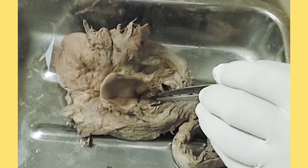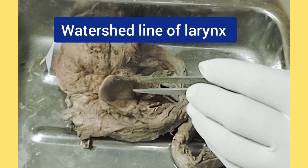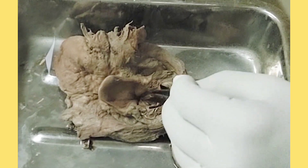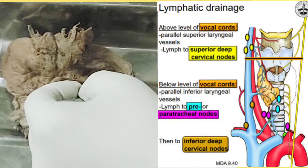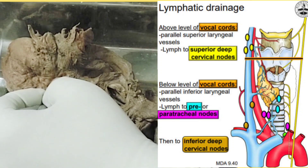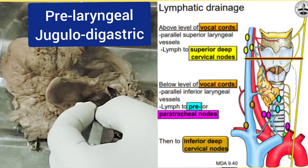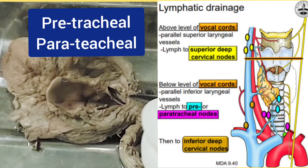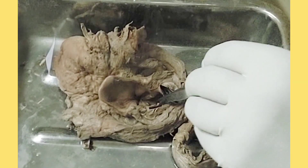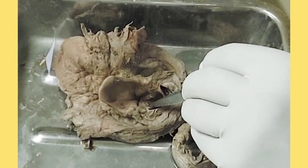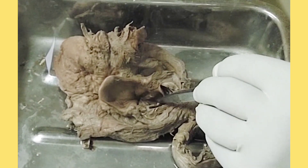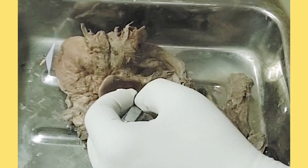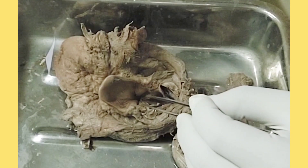Another question that may be asked: what is the watershed line of the larynx? The answer is the rima glottidis, because the lymphatics above the rima glottidis drain into the pre-laryngeal and jugulodigastric group of lymph nodes, while below the vocal folds they drain into the pre-tracheal and para-tracheal group of lymph nodes. In the region of the rima glottidis there is no submucous cord, and it is lined by non-keratinized stratified squamous epithelium, whereas in other areas they are lined by ciliated columnar epithelium.